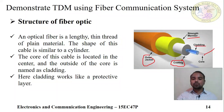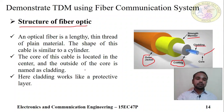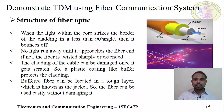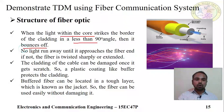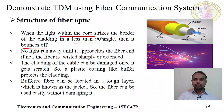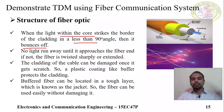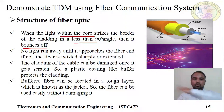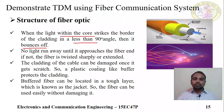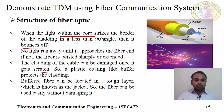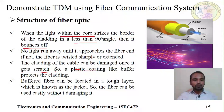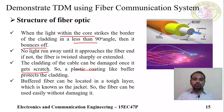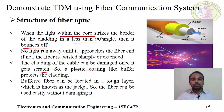The outer jacket is made up of plastic. This is the structure of the fiber optic cable. When light within the core strikes the border of the cladding at less than 90 degrees, it bounces off and stays within the core. If the cladding is scratched, the cable can be damaged. The plastic coating is used to protect the cladding, and the jacket protects the entire assembly of core, cladding, and strength member.